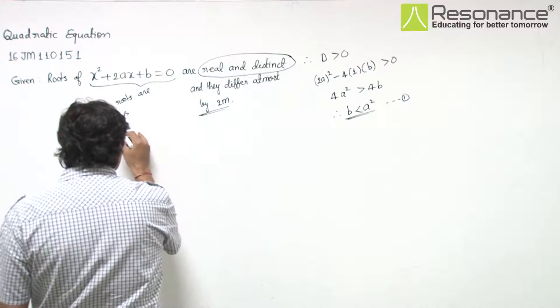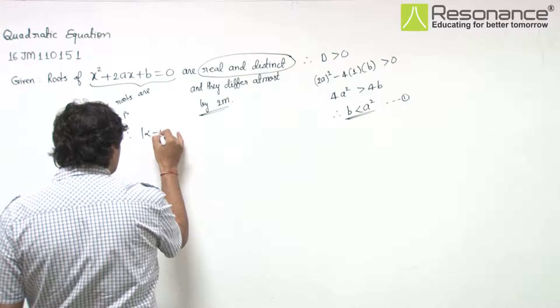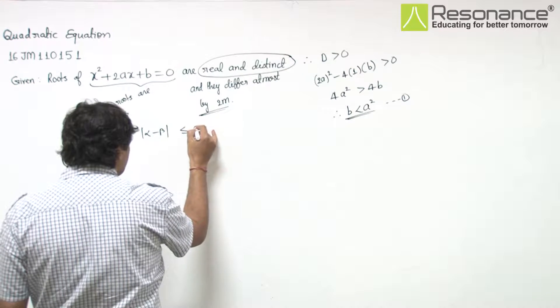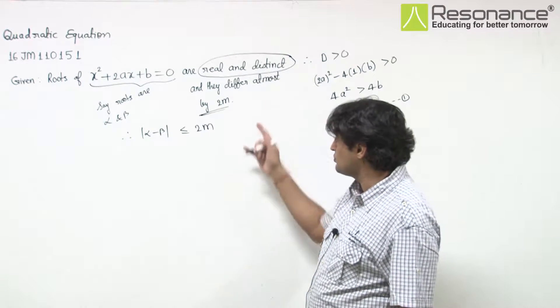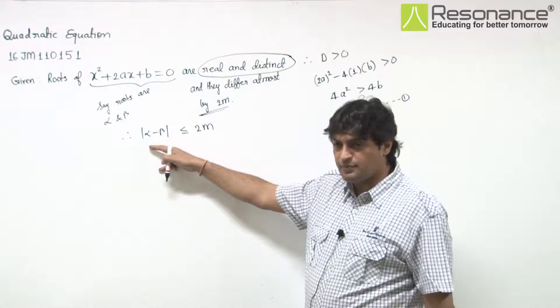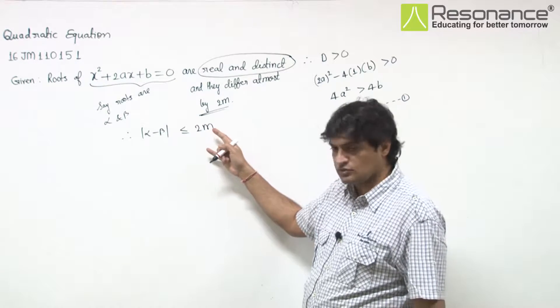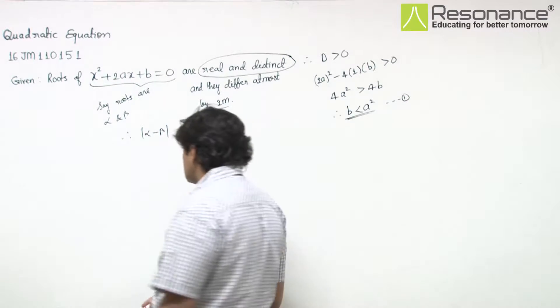At most by 2m. The mod of α - β represents the difference, which will definitely be positive, so we can square it.